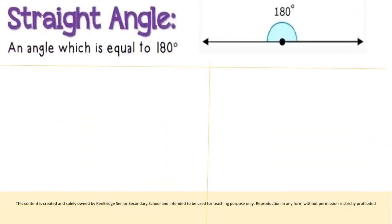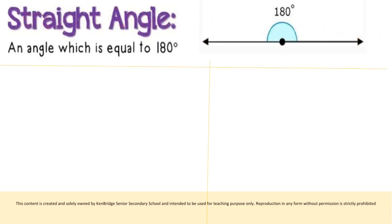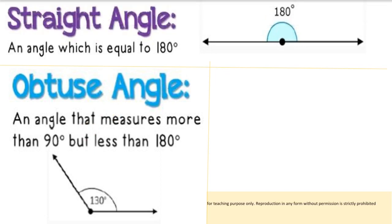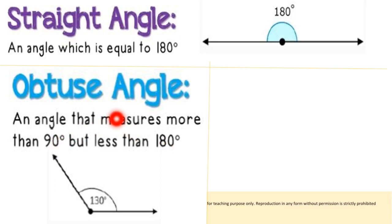A straight angle is an angle equal to 180 degrees — it looks like a straight line. An obtuse angle measures more than 90 degrees but less than 180 degrees. So: 90 degrees is right angle, less than 90 is acute, 180 is straight angle, and between 90 and 180 is obtuse angle.